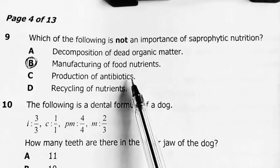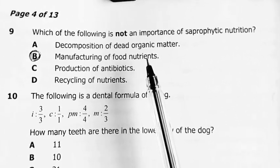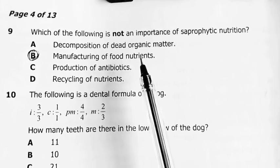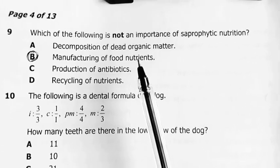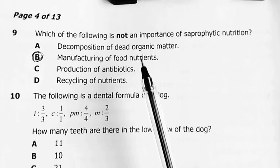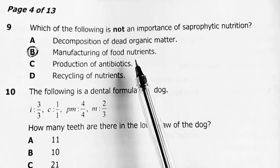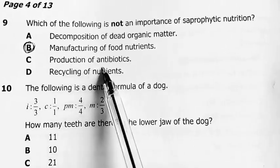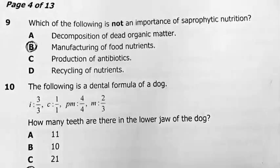Well, saprophytic nutrition involves consumption of already made complex organic matter and mostly it's dead matter. But there are some saprophytes that actually can grow in living tissue. Like athlete's foot is a very bad fungus which can grow in living tissue. But they all depend on already made food. So B was my answer. Production of antibiotics is correct. Recycle of nutrients is correct. So therefore, these three are important things. But B is not.